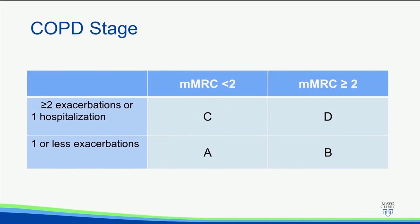For staging: if you are a frequent exacerbator, you're automatically a C or a D. If you're really short of breath — MMRC greater than or equal to 2 — you're a B or a D. So our patient is not an exacerbator, but he's very short of breath, so he's a B.